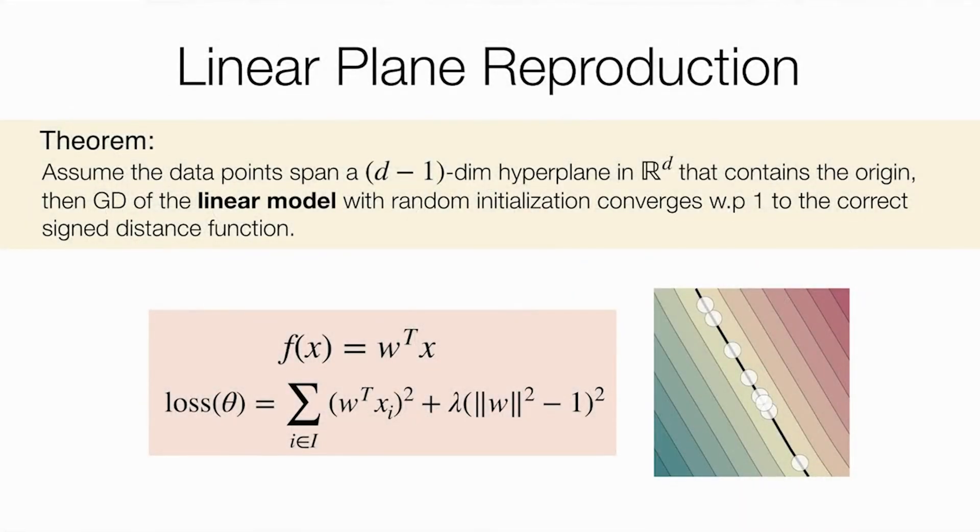We managed to do some theoretic analysis of IGR to support the empirically witnessed plane reproduction property. Namely, if the input points span a d-1 hyperplane in R^d, then gradient descent with our loss will converge to the correct sign-distance function. We proved the convergence guarantee of this property in the case of linear model, in which our loss takes the following form.